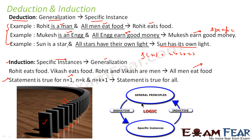Here is a diagram which explains both induction and deduction. In the deductive approach, we start with a general principle — Rohit is a man, all men eat food — and from that we derive a specific instance: Rohit eats food. The inductive approach is the other way around: we observe specific instances like Rohit eats food and Vikas eats food, Rohit and Vikas are men, and from these we generalize to the principle that all men eat food.